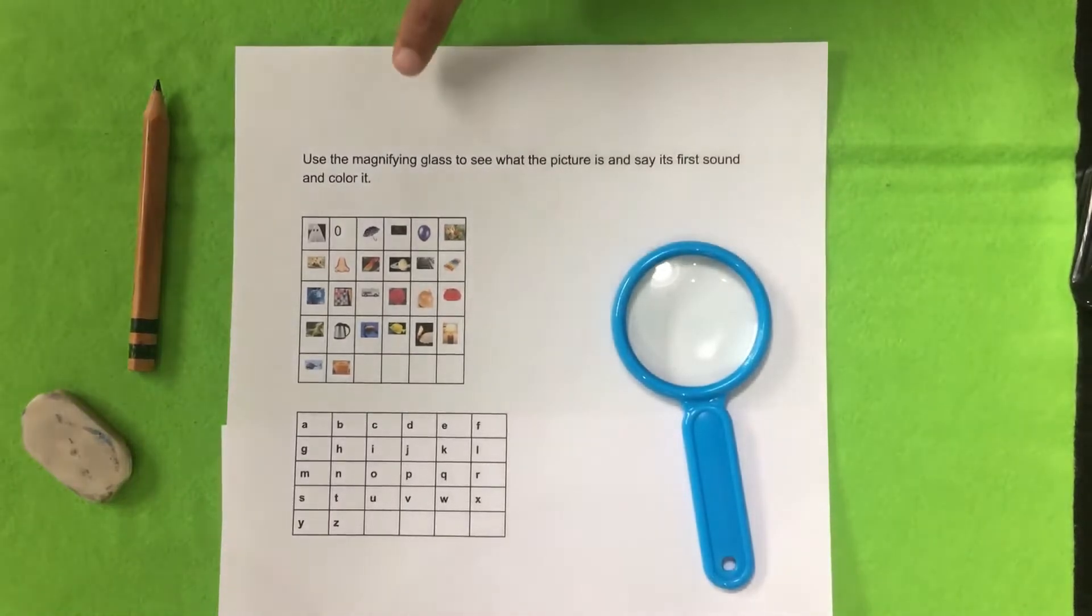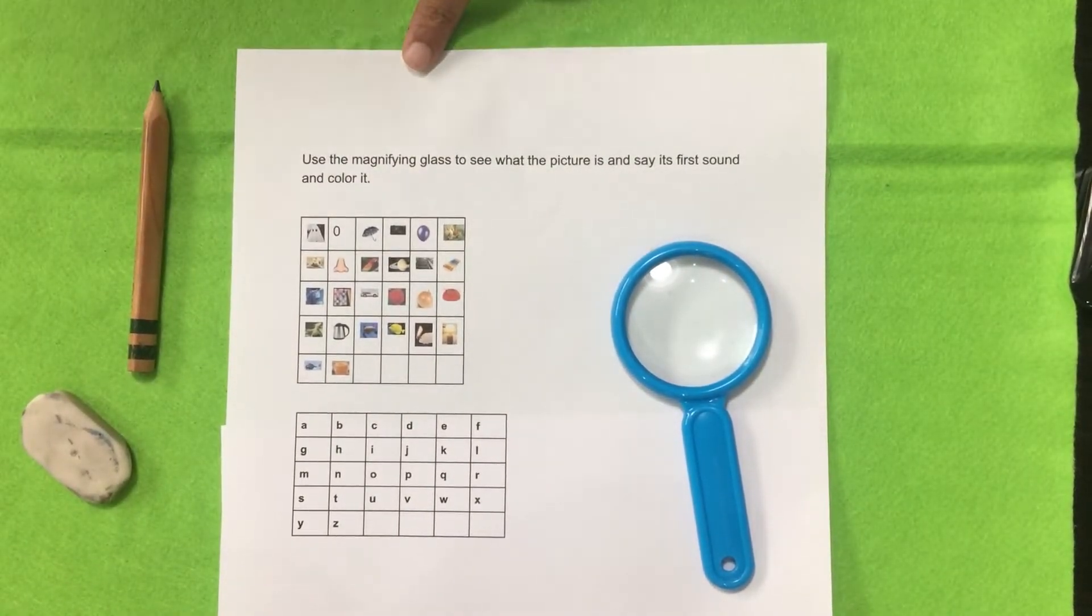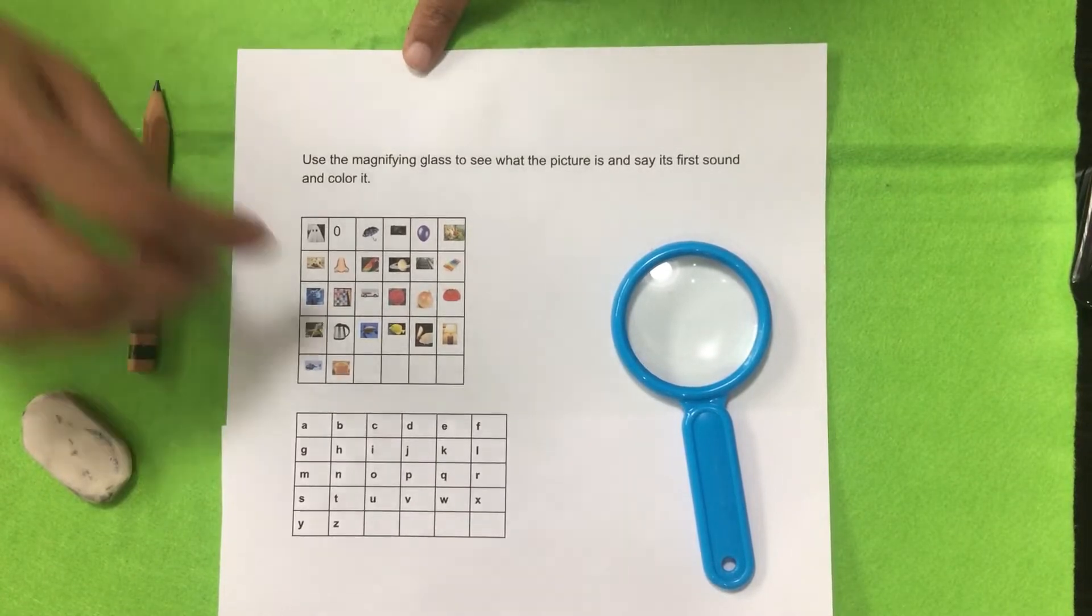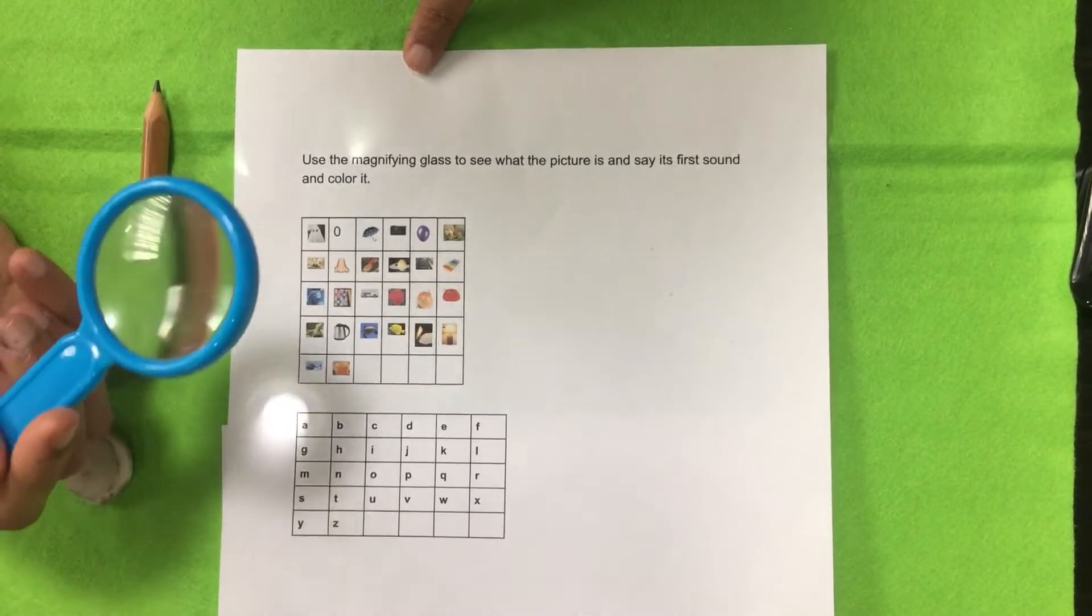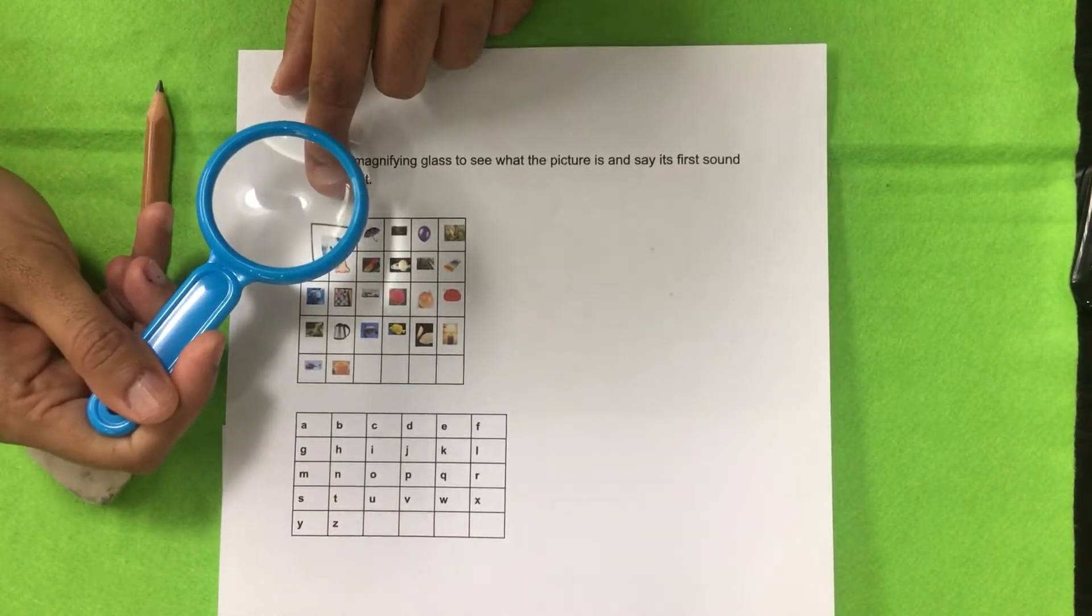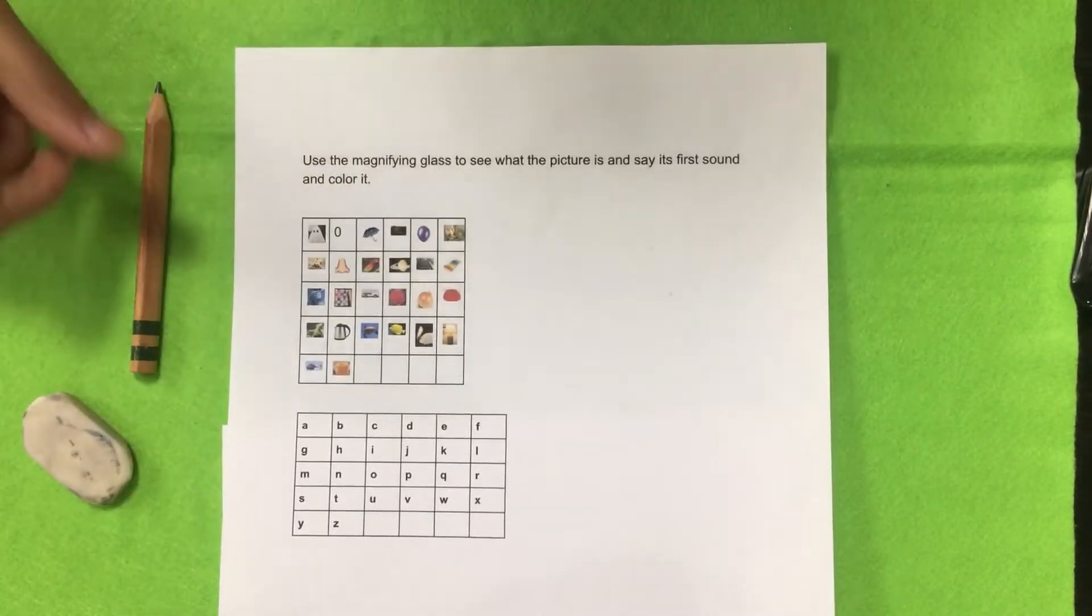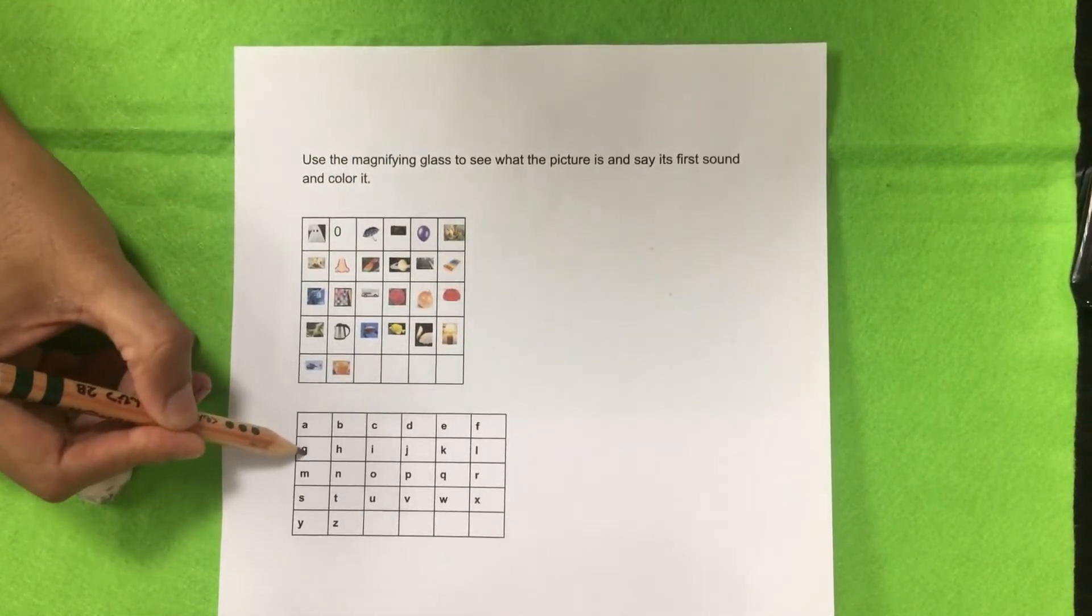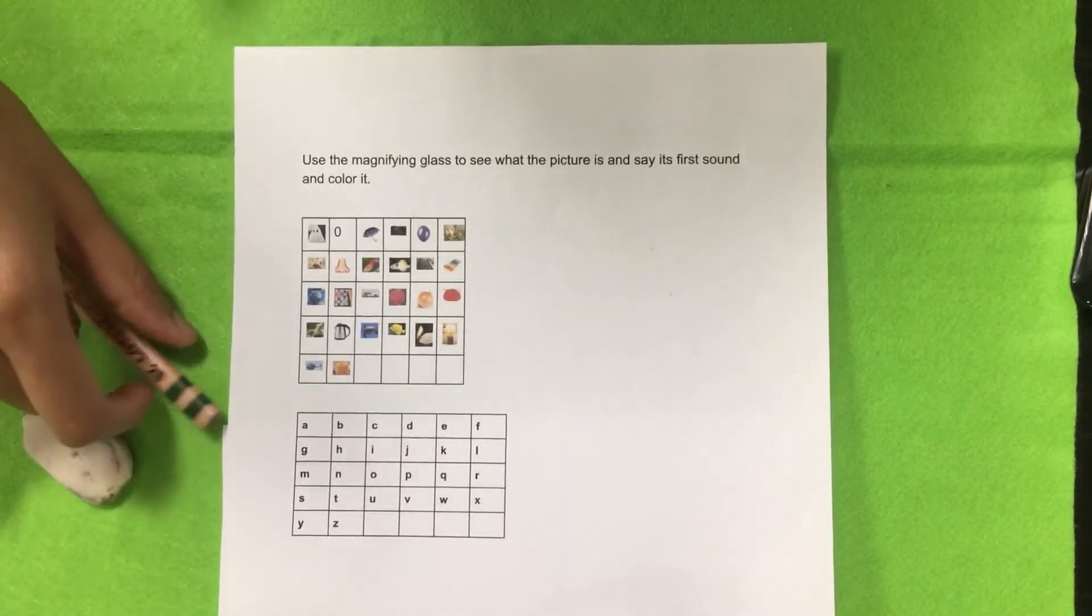The next activity is also a review on phonics, and we are going to work on the first sound. What we need to do is a fun activity where he needs to check the image using a magnifying glass and find what it is, say the first sound, and color it or stripe it or circle it in the alphabets.